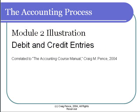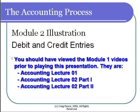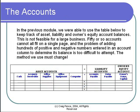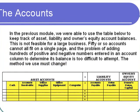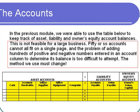In Module 1, we learned to analyze business events to determine which were transactions that had to be recorded in the accounts. Transactions were the events that caused changes in assets, liabilities, and owner equity. We recorded them using a table with accounts where we recorded increases and decreases in columns and then determined the account balances by adding and subtracting at the end of the period.